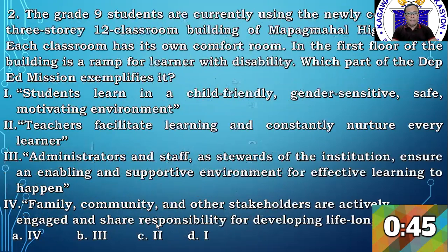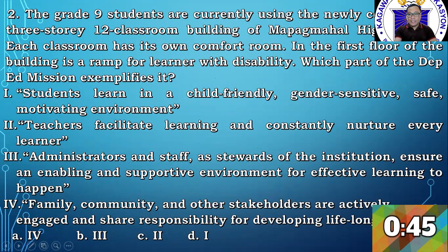Let's go to question number 2. It has its own comfort room and a ramp for learners with disability. Which is the obvious answer here? Definitely it's number 1: in a child-friendly, safe, and motivating environment. Number 1 is letter D. You might be confused — when it's number 1 you'd expect letter A, but here I placed number 1 under D. So the correct answer here is letter D.